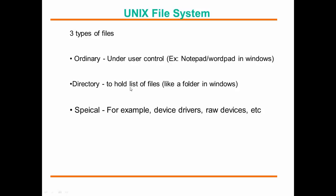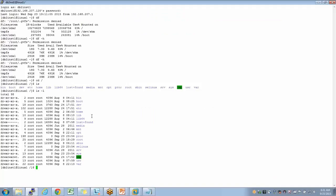Special files include device drivers, raw devices, and symbolic links — they serve a special purpose. An example comparable to Windows is a shortcut. In Unix, a shortcut is called a link, and that's a special file. You can identify the file type by the first character in ls -l output: 'd' means it's a directory — so all entries showing 'd' are directories.